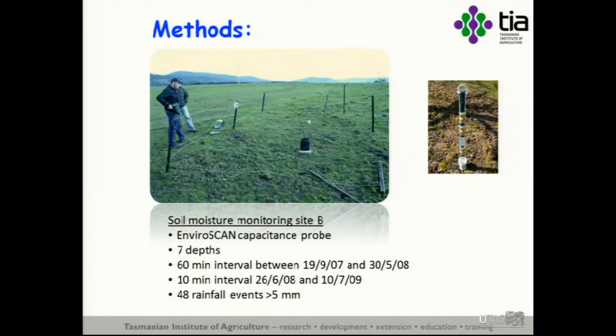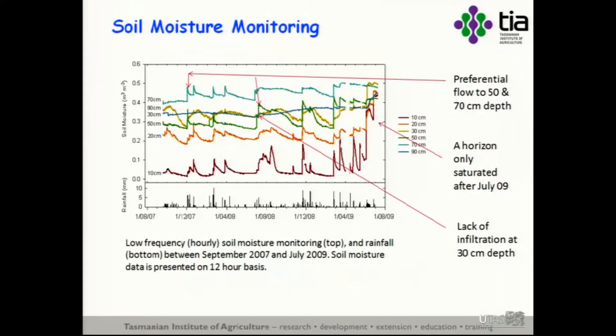Moving to understanding what mechanisms and processes actually governed those flow conditions — we set up long-term monitoring of soil moisture at quite short intervals at the site with the sand infills. From the long-term records there's plenty of evidence of preferential flow. The topsoil for most of the year didn't even wet beyond 10%. And yet, even though it only went to 10%, we had infiltration all the way through to 70 centimetres, but not 30 centimetres — that horizon was completely bypassed, with infiltration routed beyond the sensor area of detection.